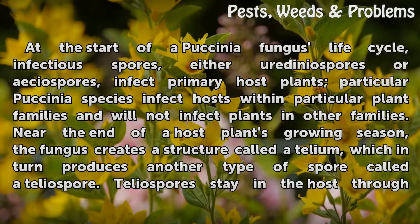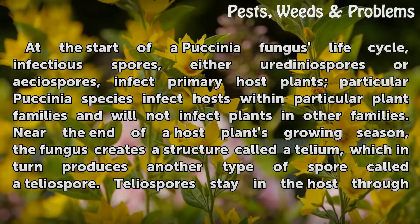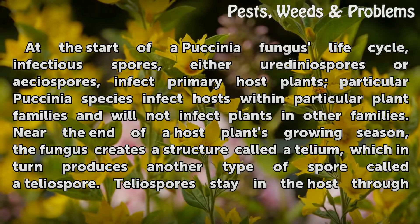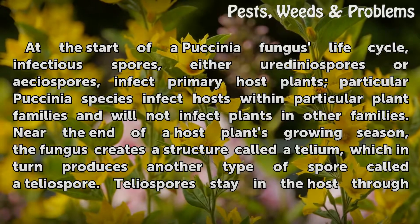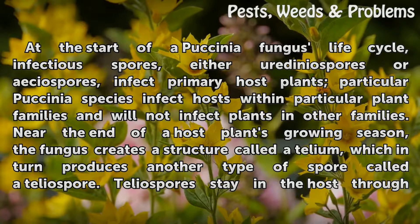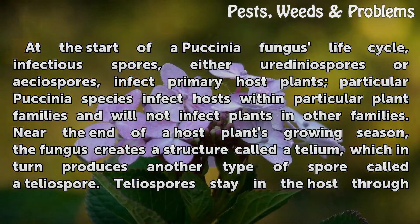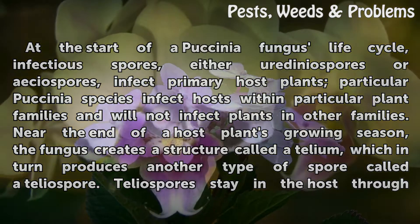At the start of a Vaxenia fungus life cycle, infectious spores, either uridineospores or eciospores, infect primary host plants. Particular Vaxenia species infect hosts within particular plant families and will not infect plants in other families. Near the end of a host plant's growing season, the fungus creates a structure called a telium, which in turn produces another type of spore called a telium.